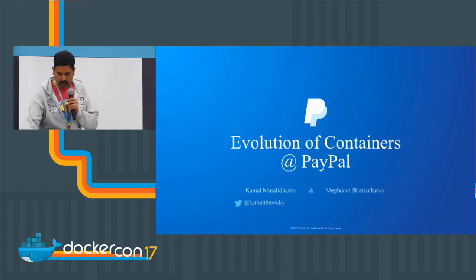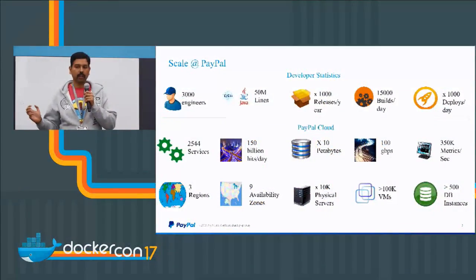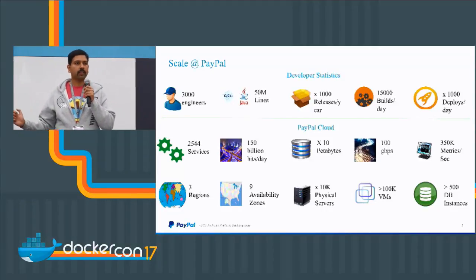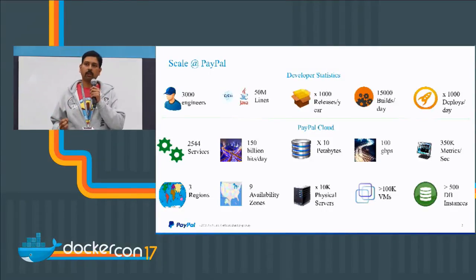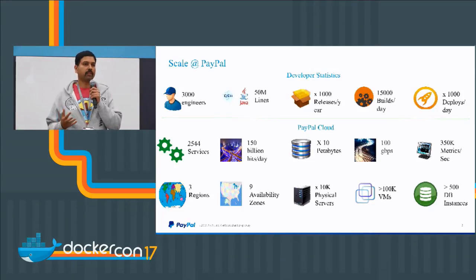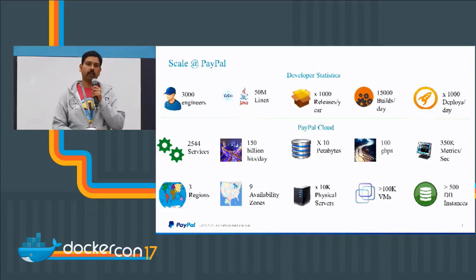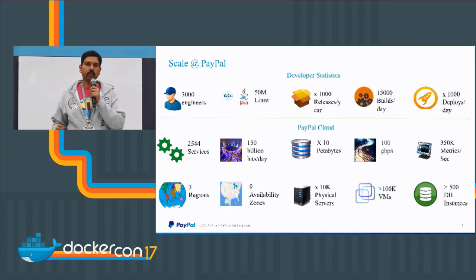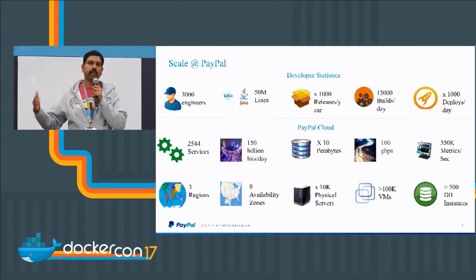To start with, it's the scale at which PayPal operates. The reason for this slide is we want to talk about how something which looks very trivial — like adoption of Docker into an ecosystem — becomes very complex at this scale. We have 3000 services already running in production, serving customers, developed over the last 10 to 15 years, and you want to bring new technology into such scale and complexity. This talk will go through what we are doing to reduce that complexity and enable us for the future.